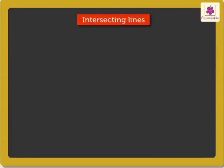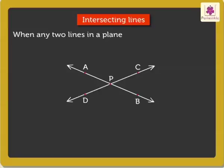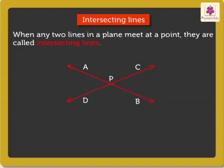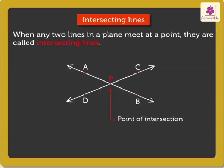Next is Intersecting Lines. When any two lines in a plane meet at a point, they are called intersecting lines. The point at which the two lines intersect is called the point of intersection. Here, point B is the point of intersection.